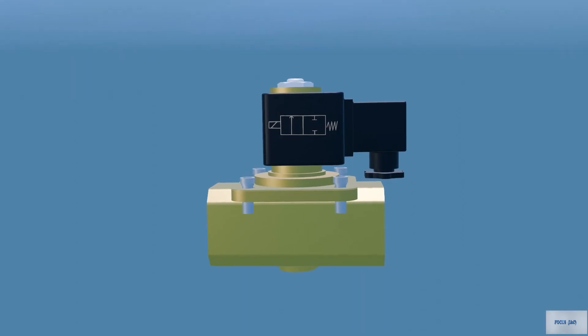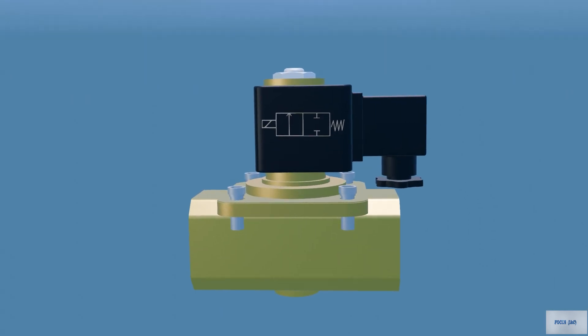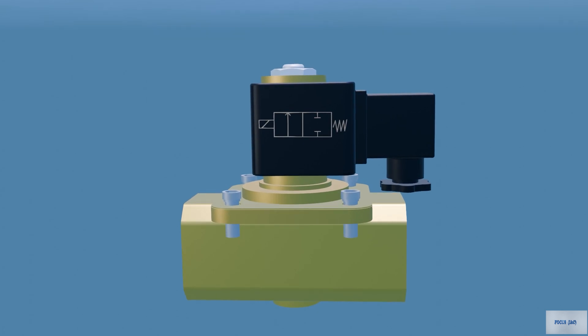Two-way valves have one inlet and one outlet pipe connection. They are used to allow or shut off fluid flow. The two-way valve is the most common type of solenoid valve.